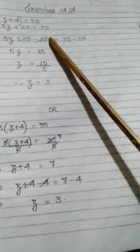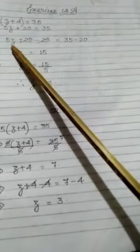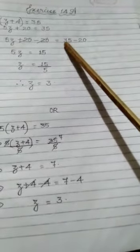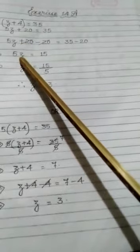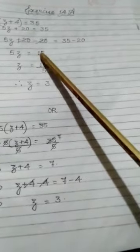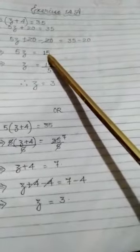So 5z plus 20 minus 20 is equal to 35 minus 20. On doing it you are getting 5z is equal to 15. 35 minus 20 is 15, so I have written 15 here on the right hand side.